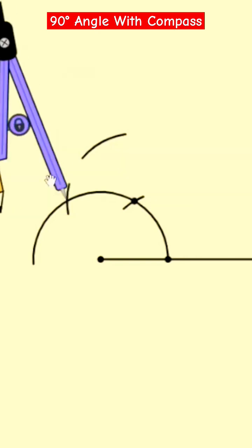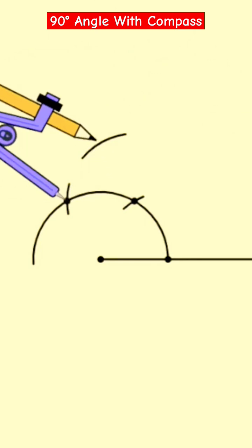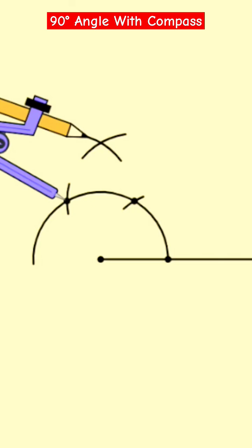Now from this point you have to make one more arc to cut the previous arc. Once you have done this, your point to make the 90 degree angle is ready.